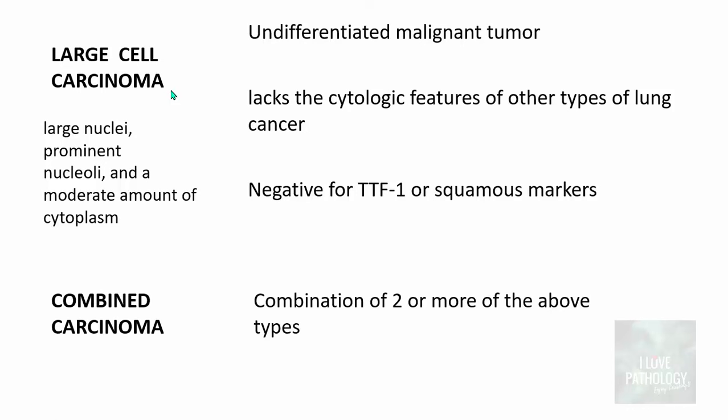There can also be combined carcinoma — a combination of two or more of the above types. Regarding spread, lung cancers can spread by direct invasion, lymphatics, or hematogenous routes. Direct invasion can involve the pleura and chest wall. Metastasis is the most important mode — no organ is spared. The most common site of metastasis in lung cancers is the adrenal glands, accounting for 50% of cases. It can also be seen in liver, spleen, and brain.